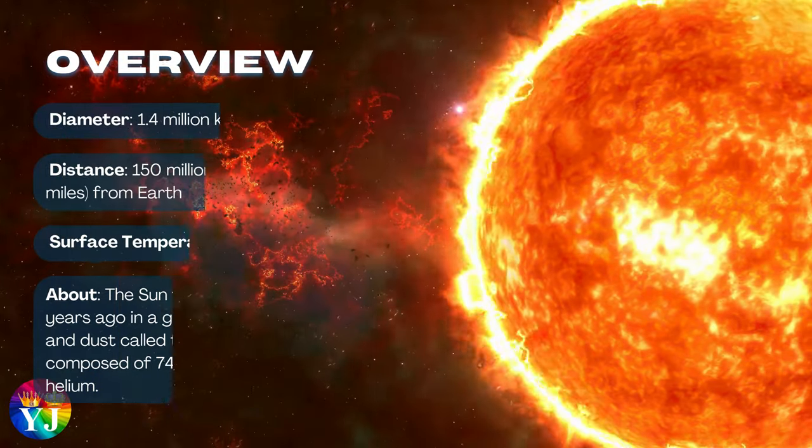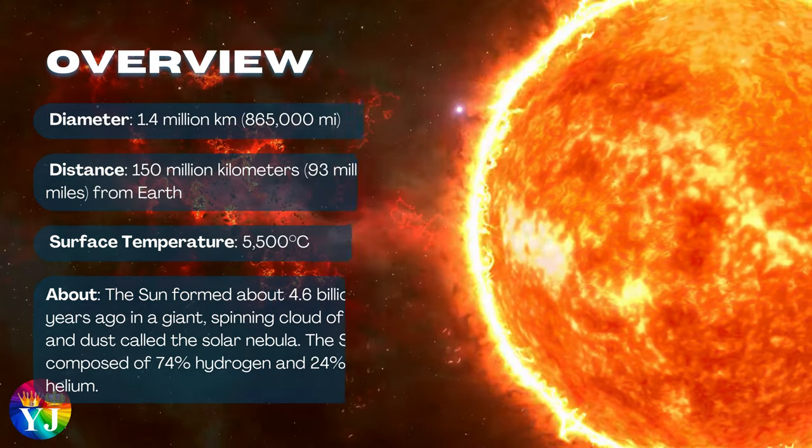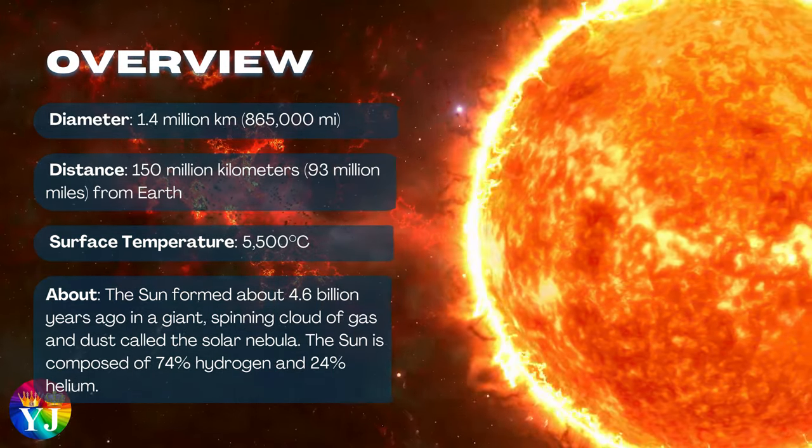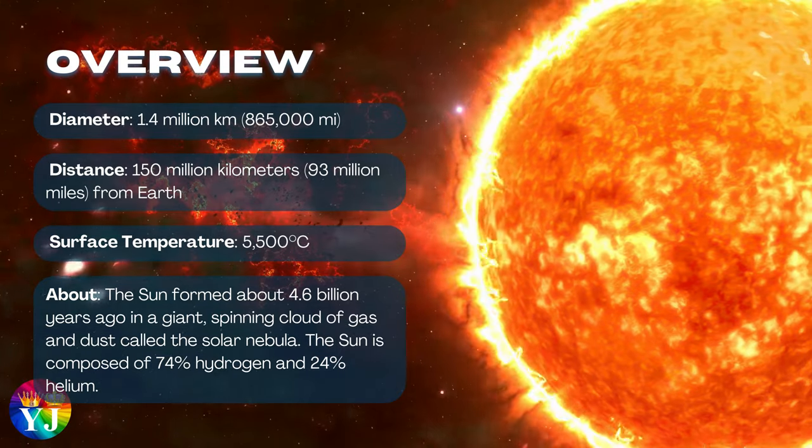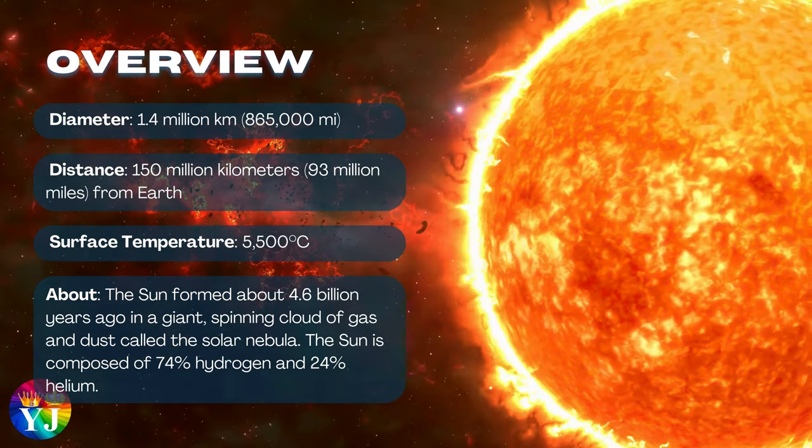Overview of the Sun: Diameter 1.4 million kilometers, Distance 150 million kilometers from Earth, Surface temperature 5,500 degrees Celsius.